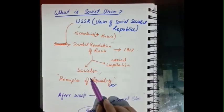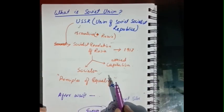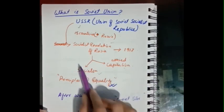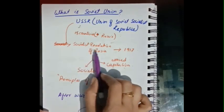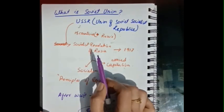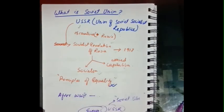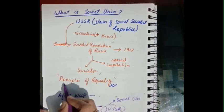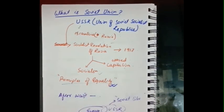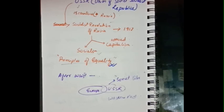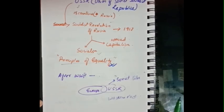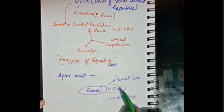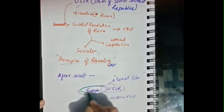Socialism means working for the welfare of society. We can say that this revolution of Russia was the biggest attempt in human history to design a society based on the principle of equality.